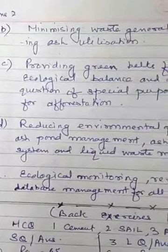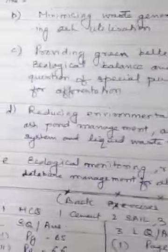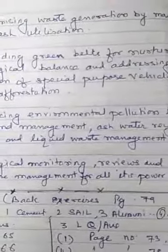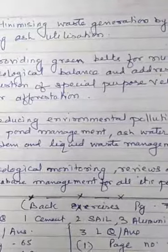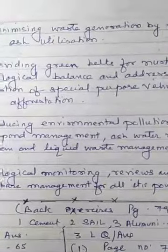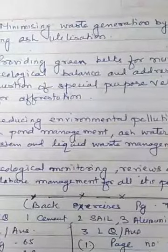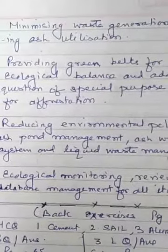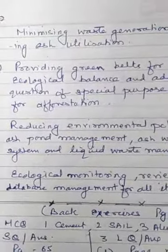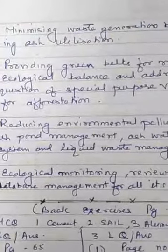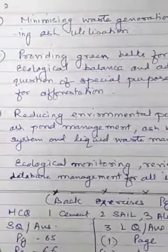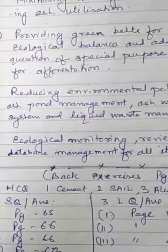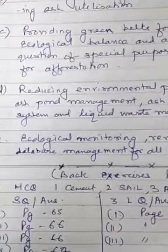Number D: reducing environmental pollution through ash pond management, ash water recycling system, and liquid waste management. Ash pond system means a pond-like structure is dug around the thermal power plant. All ashes are dumped there, then covered by soil, and trees and plants are planted on the upper layer. Greenery returns and the ashes are not exposed to rain, water, or wind, so soil is not degraded.